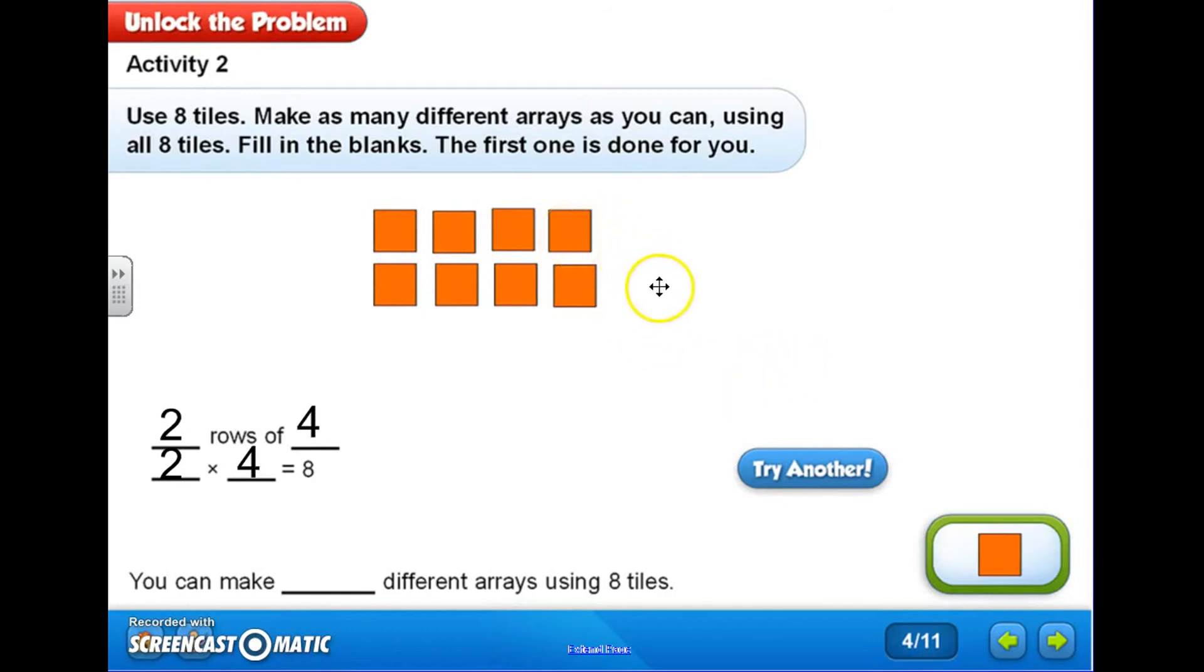So now I have seen that I have four different ways of arranging these tiles, making four different arrays: a one by eight, an eight by one, a four by two, and a two by four. Those are all different arrays that give me the same product of eight. So my answer here is that I can make four different arrays using eight tiles.